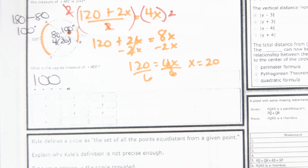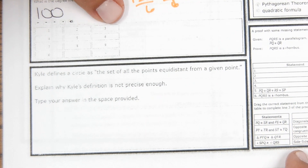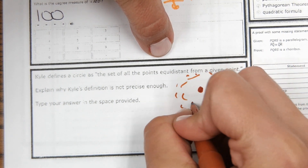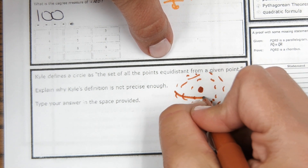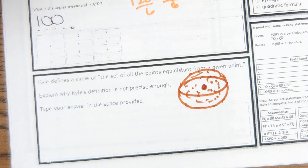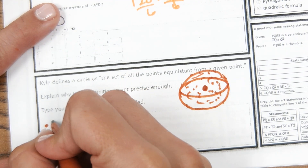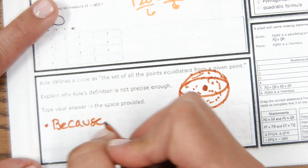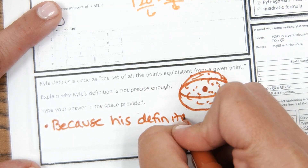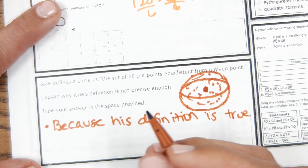Kyle defines a circle as the set of all points equidistant from a given point. This definition isn't precise enough because it could also describe a sphere — all points equidistant from a given point in three-dimensional space form a sphere, not a circle. The concept could still appear in a different format on the EOC, and it relates to whether you're working in 2D or 3D space.